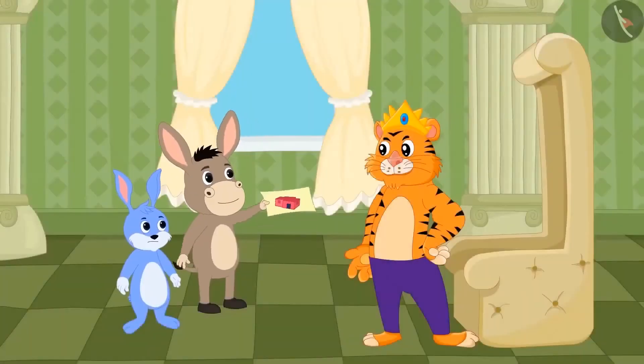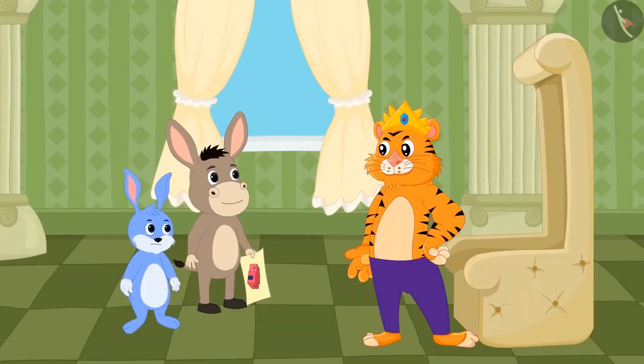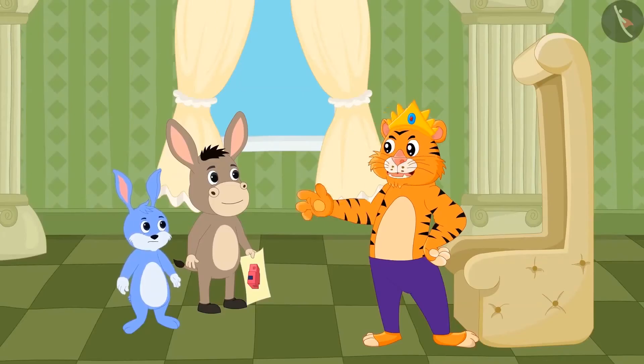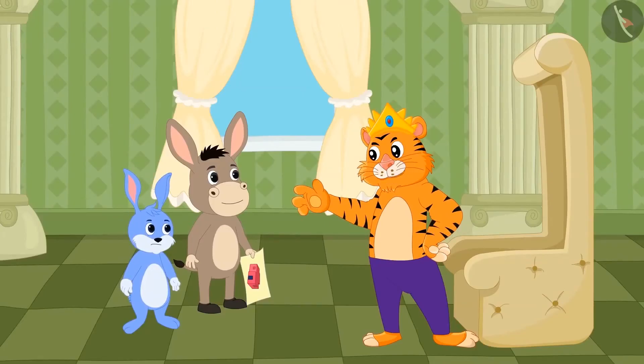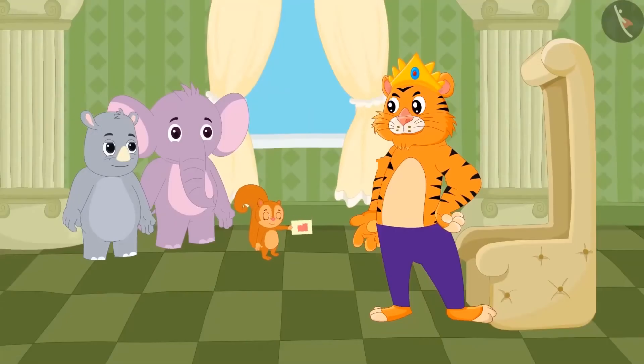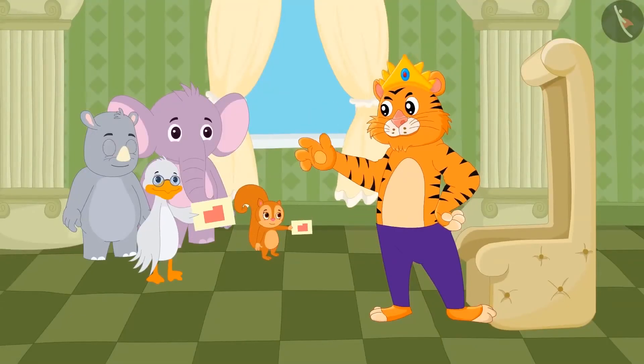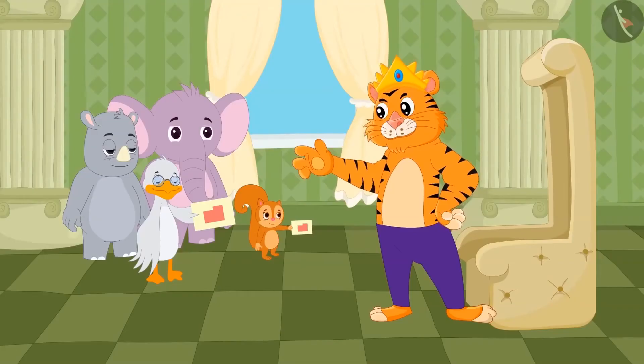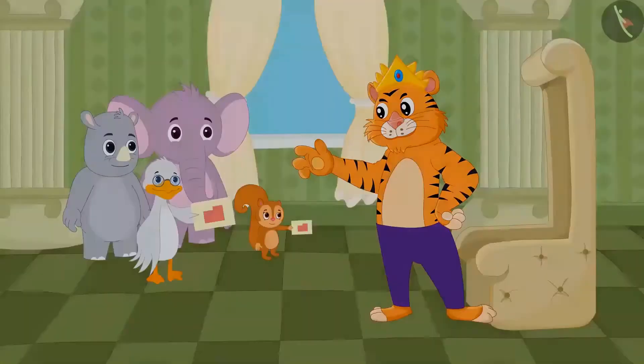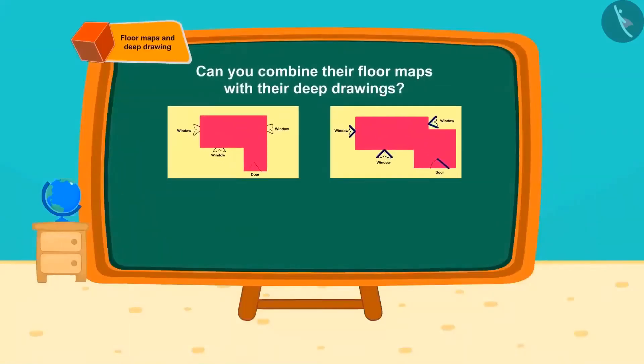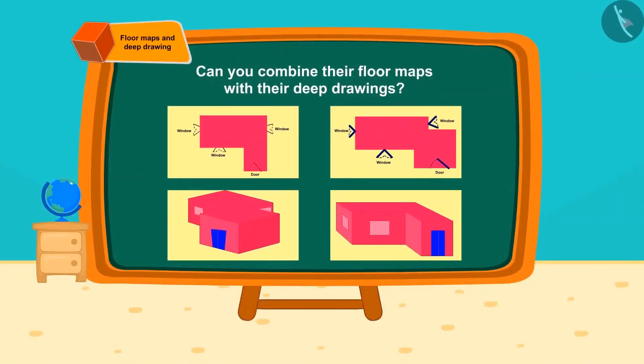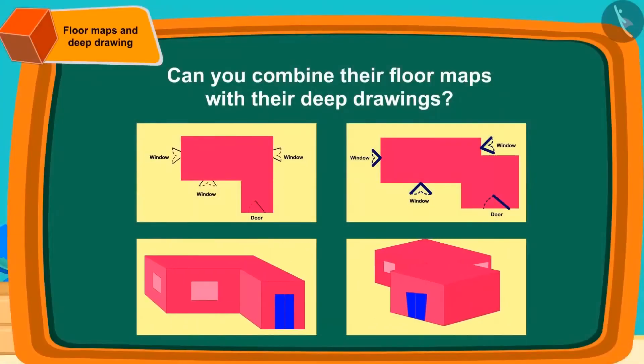The king liked the design made by Bholla, but he wanted to see some more designs by different people. The next day, Chanda and Babble Uncle Duck reached the king's court with their floor map and deep drawings. Can you mix floor maps with the deep drawings? You can find the answer to this question by pausing the video. Well done kids, your answer is absolutely right.